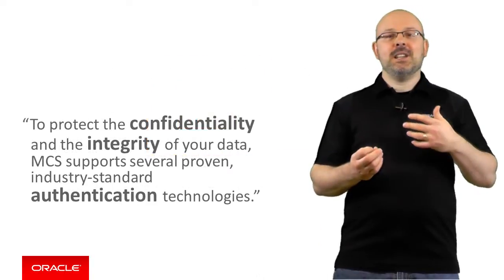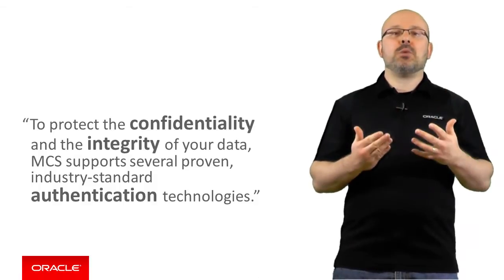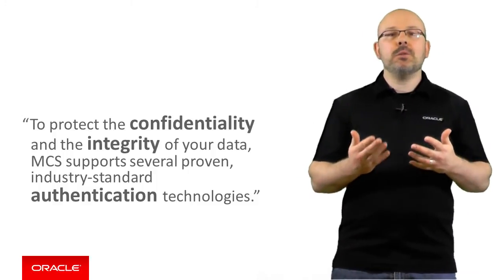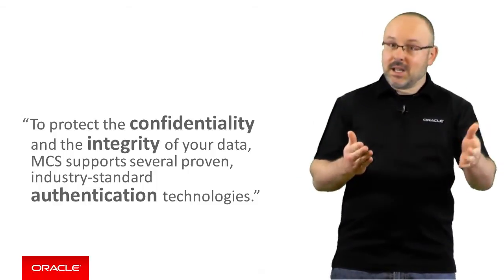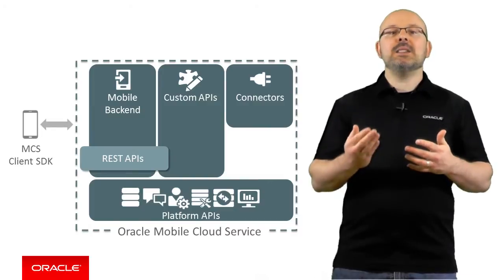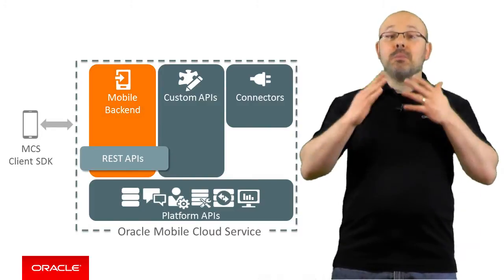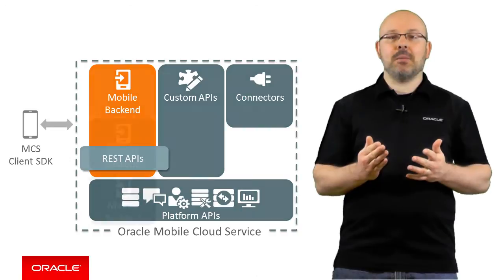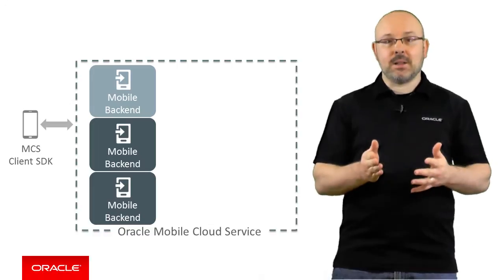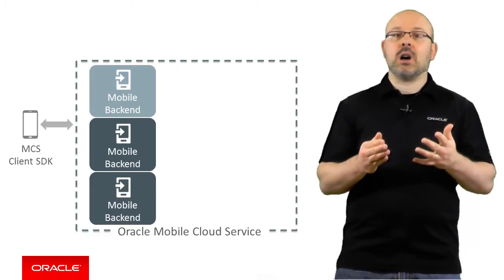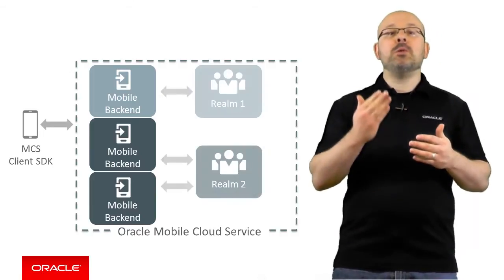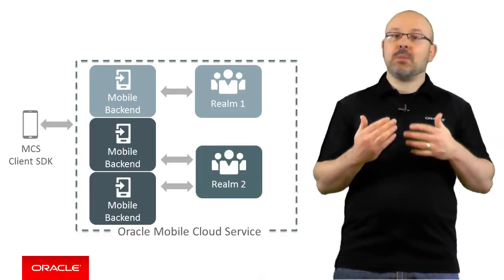To protect the confidentiality and the integrity of your data, MCS supports several proven industry-standard authentication technologies. You will learn more about these in other episodes. Authentication, in the context of MCS, happens at the level of mobile backends. This means a mobile application can authenticate to multiple backends at the same time. However, the user profiles and the roles they belong to do not belong to the backend — they are rather defined in a container called a realm. A backend can be associated with one and only one realm, but realms can be shared across multiple backends.